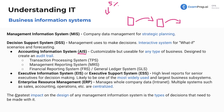Lastly, just a point to know for a possible multiple choice question: the greatest impact on the design of any management information system is the types of decisions that need to be made with it. That pretty much makes sense — you're going to build a house generally for what its purposes are. If it's meant to house 10 people, you're going to probably put 10 bedrooms in there. If you need a system that has strong security because there's a lot of fraud, you're probably going to put a lot of security in there. The greatest impact on the design of any system is really just what types of decisions need to be made with that system. Just build the system for what it is needed for.